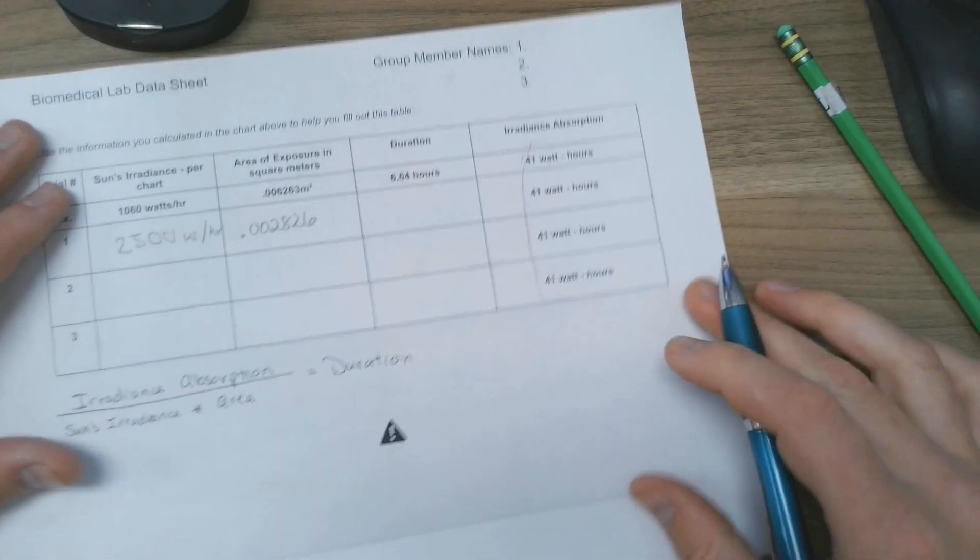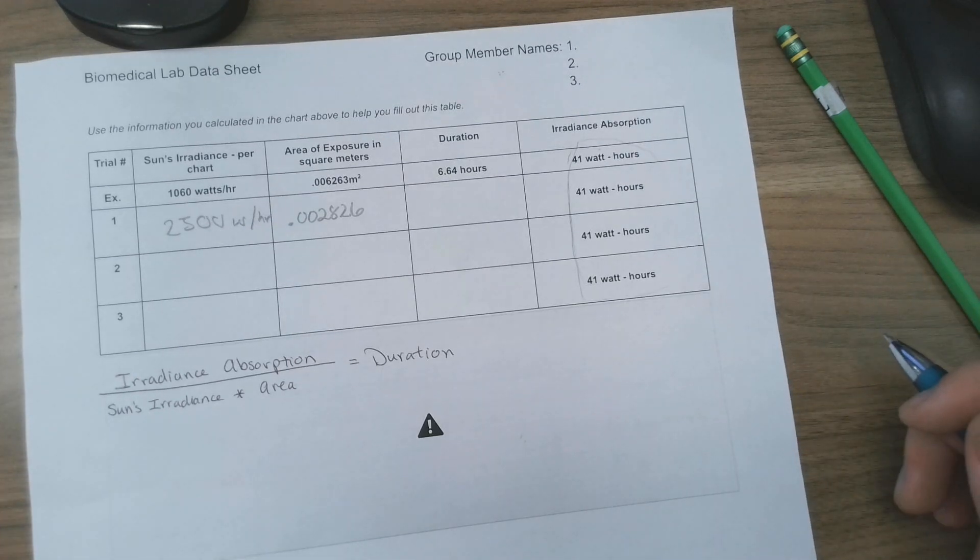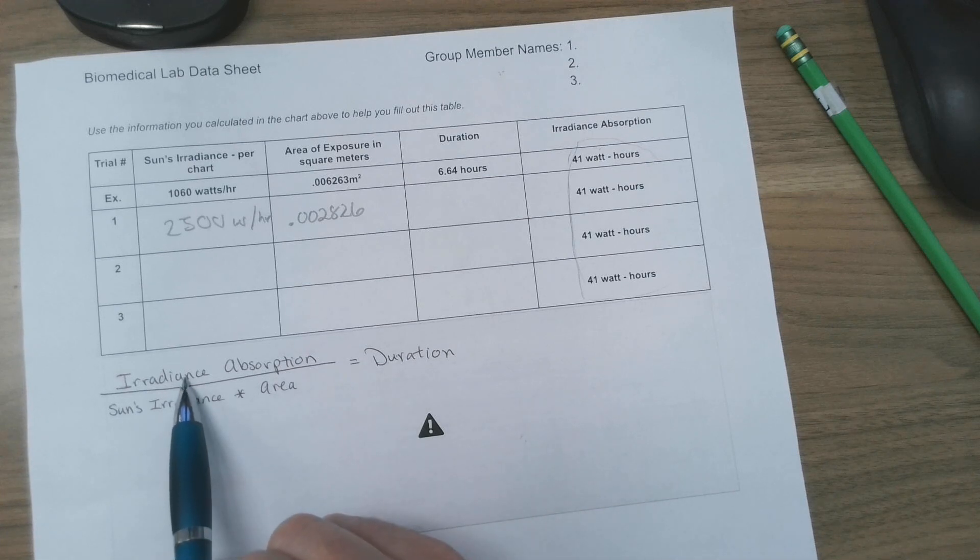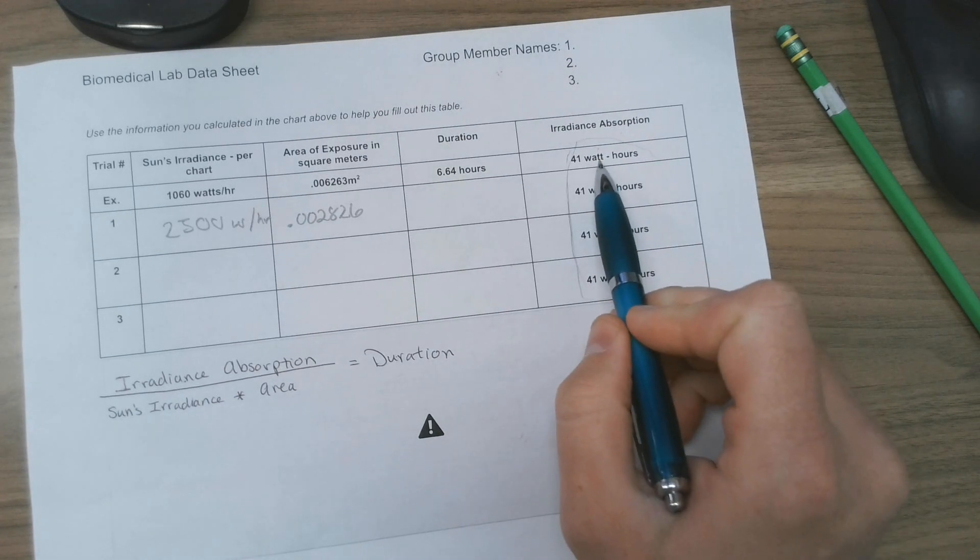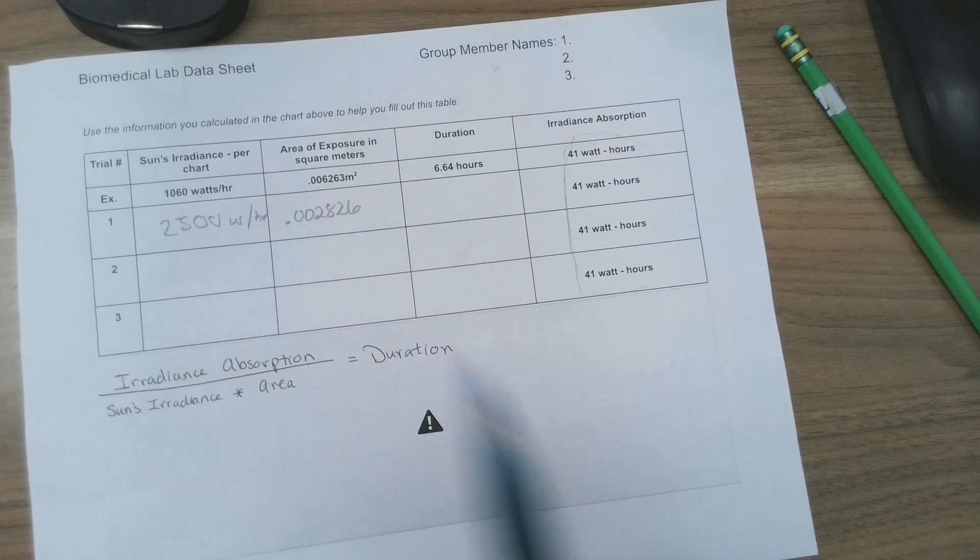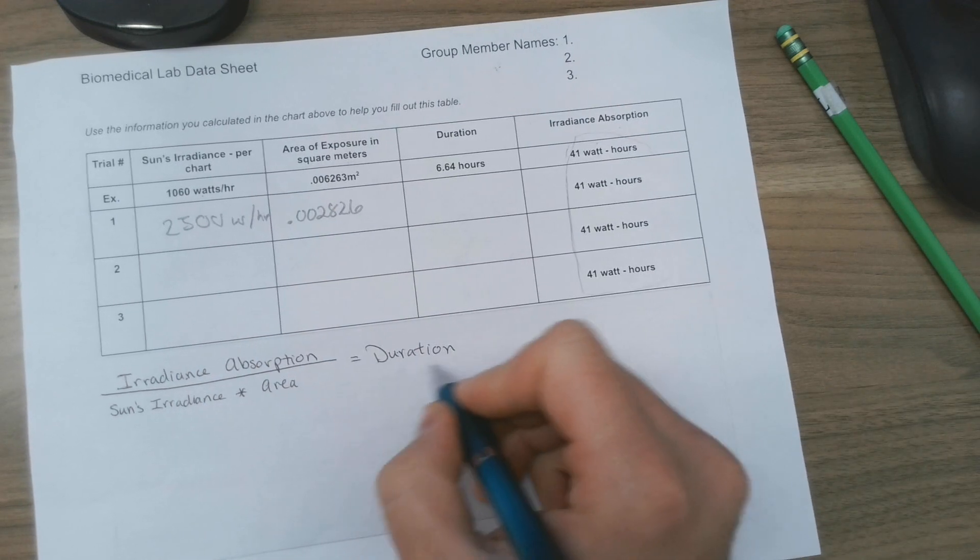Okay, so we're looking for the duration. If you look on slide I believe it's 28 of our workbook or our Google presentation, it has the equations on that slide. And the equation for the duration is the irradiance absorption, which is 41 hours, divided by the sun's irradiance multiplied by the area of exposure. That's going to give you the duration.